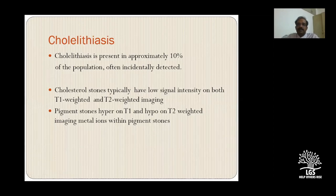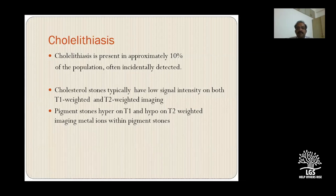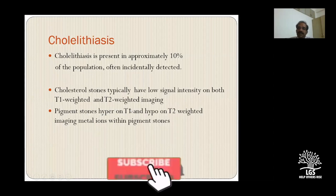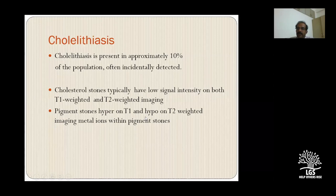Most commonly, surgeon requests come for cholelithiasis - to see whether calculi have migrated to the CBD and whether there is inflammation of the gallbladder. Around 10% of the general population may have gallstones. Cholesterol gallstones have typically very low signal on T1-weighted sequences - you may not even see the calculus. On T2 they appear as filling defects - hypointense - because they have a lot of calcium with no water signal. Pigment stones, on the other hand, can appear hyperintense on T1 due to metal ions, allowing differentiation between cholesterol and pigment stones.